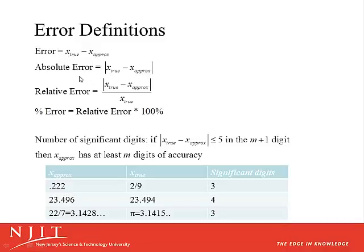The relative error is the absolute error divided by the true value, all in absolute values. The percentage error is the relative error times 100%. So if the true value were 1,000 and our approximate value were 900, the error would be 100, the absolute error would be the same, the relative error would be 100 over 1,000 or 0.1, and the percentage error is therefore 10%.